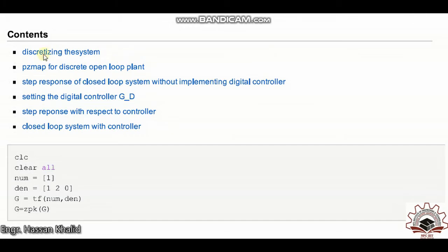Alright, let's discuss the content of this simulation. First, we will discretize the system and then check the PZ map of our discrete open loop plant by demonstrating the poles and zeros location.